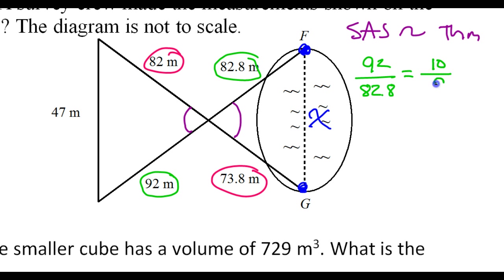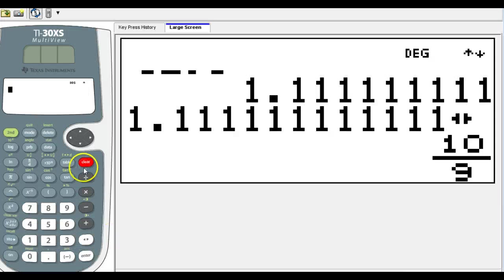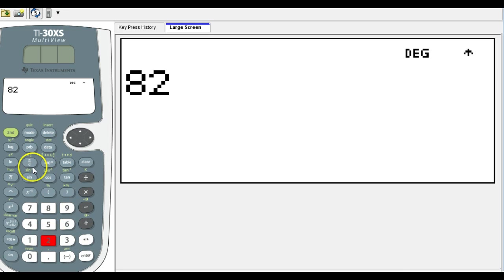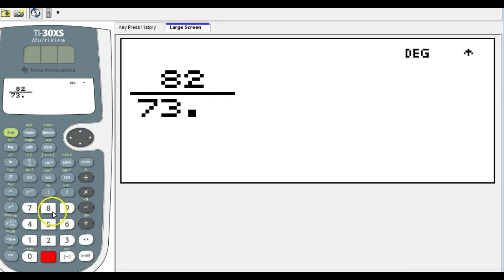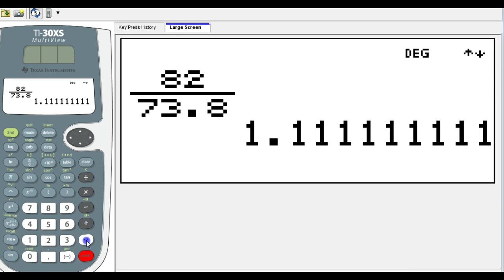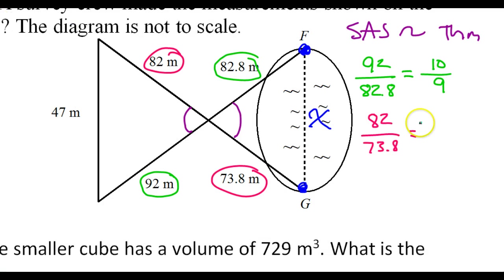All right, so that's a scale factor of 10 over 9. Now let's see if we get the same thing from the pink numbers here. So that would be 82 over 73.8. Look at that, 10 ninths. Okay, so now we know that they are, in fact, similar triangles by the side-angle-side similarity theorem.